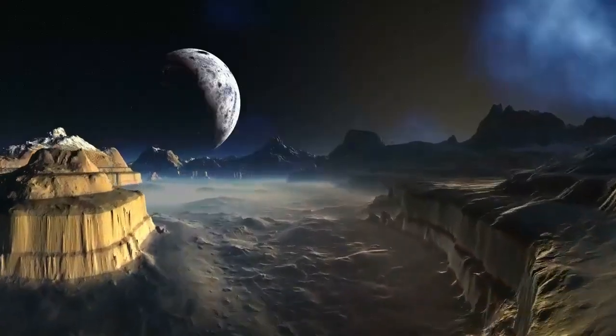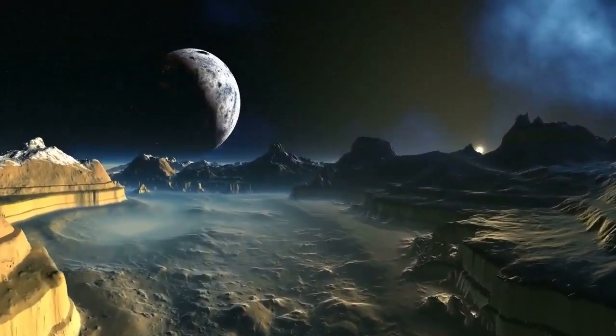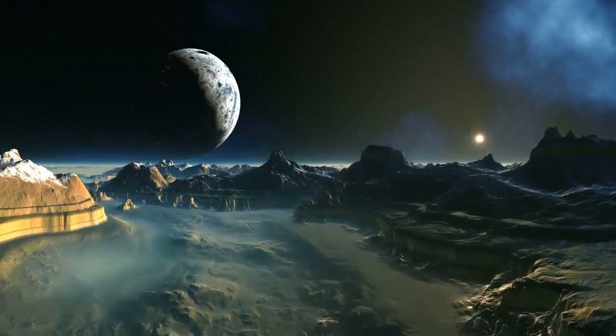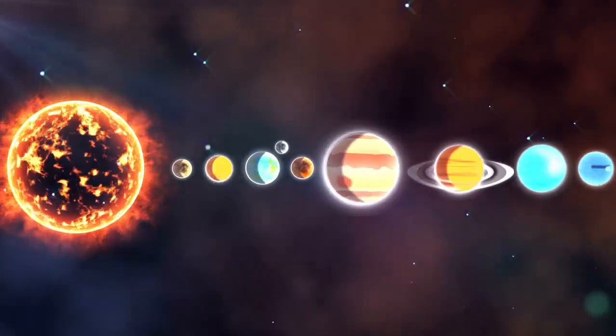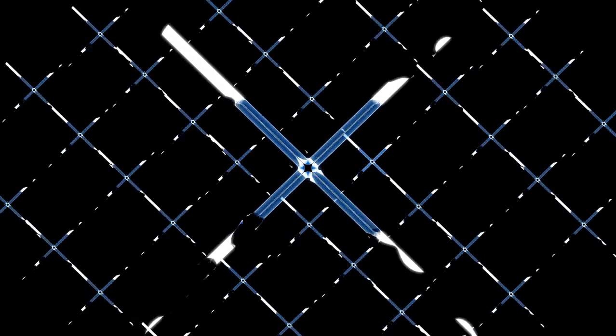The James Webb Space Telescope's capture of the clearest image yet of Proxima Centauri b is a watershed moment in astronomy and the search for extraterrestrial life. This remarkable achievement offers a tantalizing glimpse into a potentially habitable world, igniting hope and excitement about the possibility of discovering life beyond Earth.